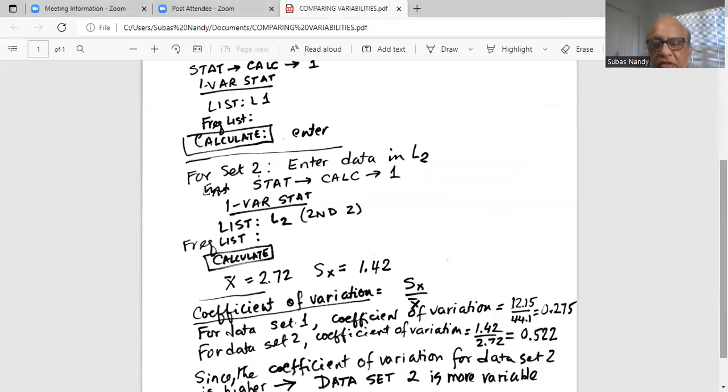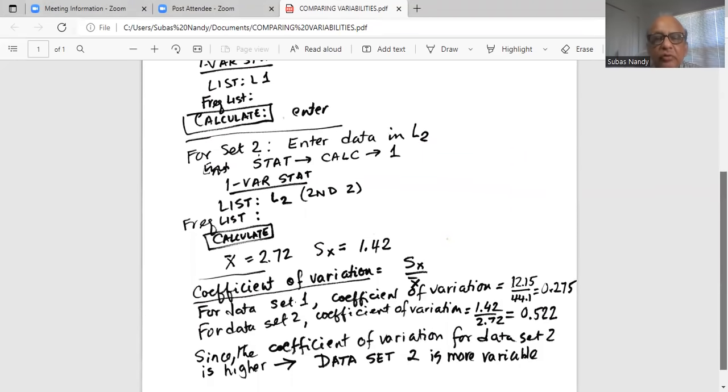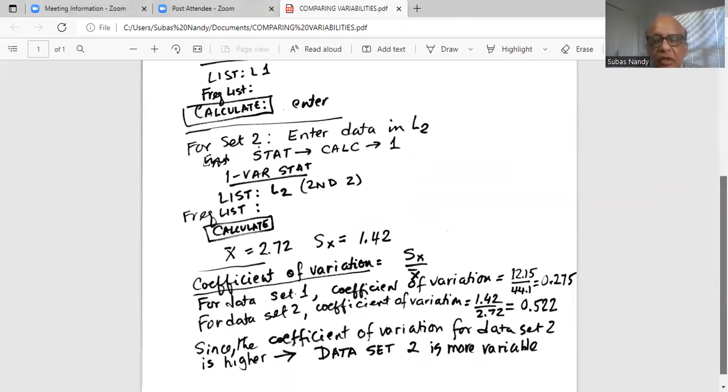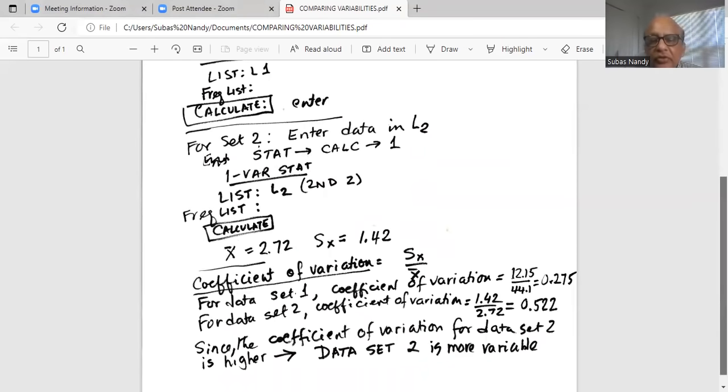For the second data set, coefficient of variation is 1.42, standard deviation divided by mean, which is 2.72 and the answer is 0.522.